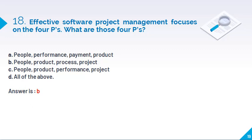Effective software project management focuses on the four P's. What are those four P's? So people, product, process and project.